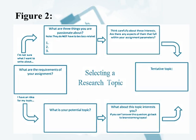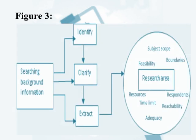Figure 2 is about the process of selecting a research topic. It focuses on requirements of the assignment and ideas for a potential topic. The upper side of Figure 2 shows that assignment requirements lead to three things: what you are passionate about, your interests, and assignment parameters — ultimately leading to a tentative topic. The lower side similarly leads from potential topic interests to a tentative topic. Figure 3 is based on searching background information to identify, clarify, and extract a research topic from a research area.